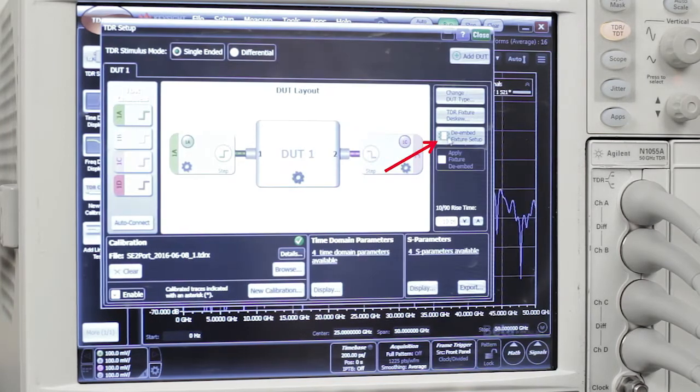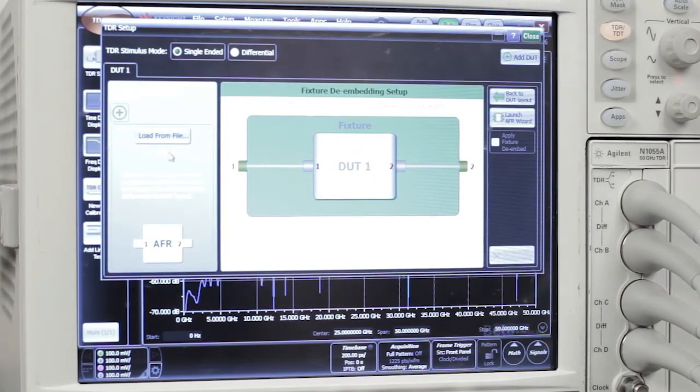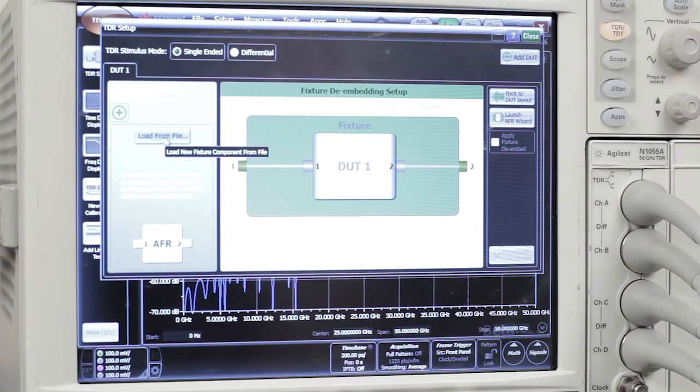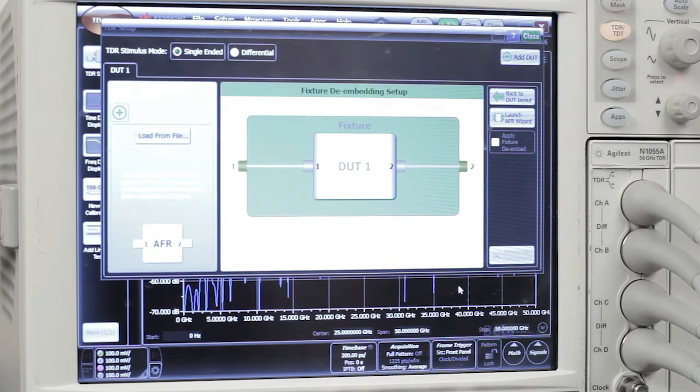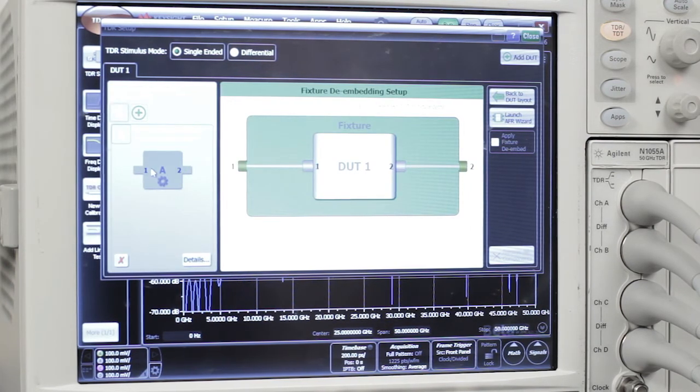We go back to the setup and into our de-embed setup. We just need to now find the S-parameter file for our fixtures. So we're going to load that S-parameter file, which is on the desktop. We're going to select that. And now I can put this for each port.